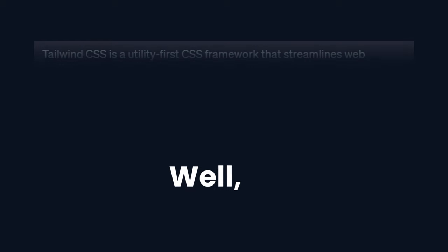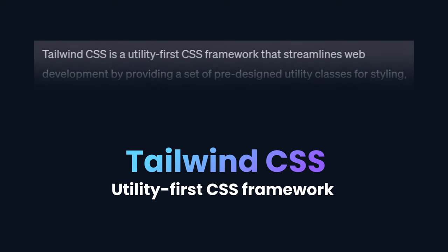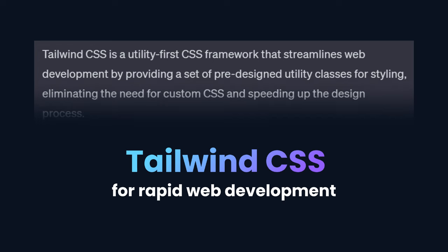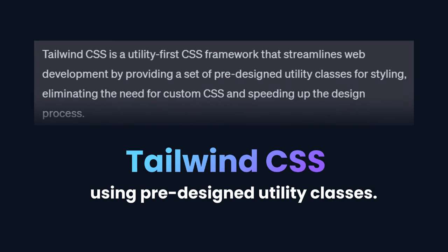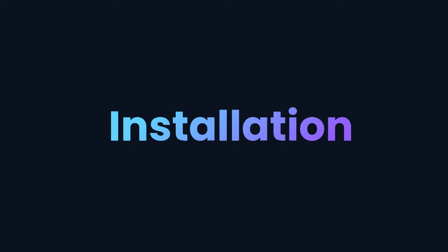Tailwind CSS is a utility-first CSS framework for rapid web development using pre-designed utility classes.